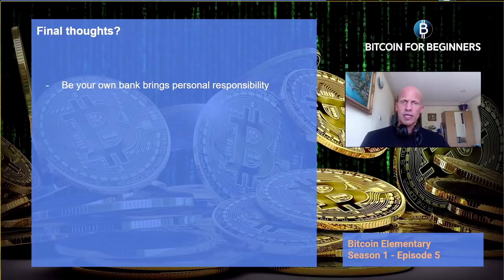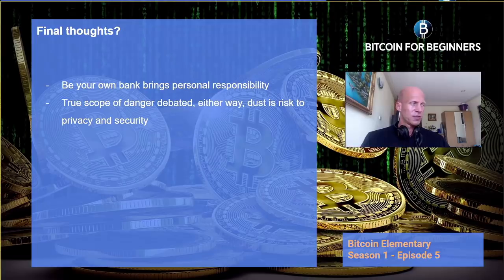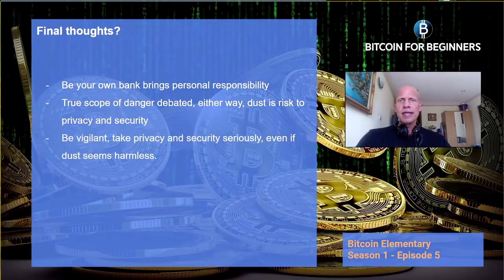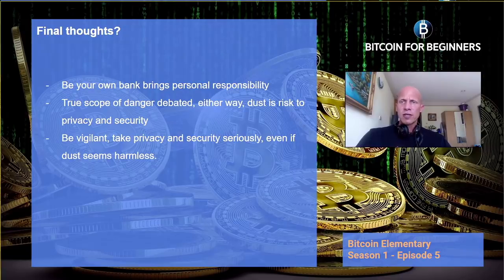Admittedly, the true scope and size of actual dusting attacks is not very well known and sometimes even debated. But dust does most definitely exist and addresses receiving dust is also not uncommon. So whether dust is maliciously spread or not, any dust may impose a risk of compromising your privacy and security of your coins. In any case, users must be vigilant at all times so that they can identify any unexpected additional amounts of Bitcoin sent to their wallet addresses. This way they can take the appropriate steps to avoid being tracked and consequently prevent themselves from losing their personal information to scammers.